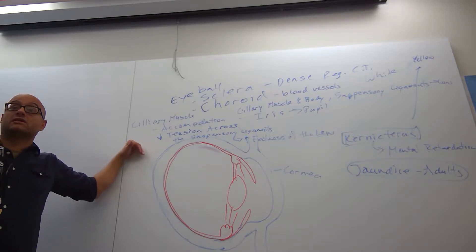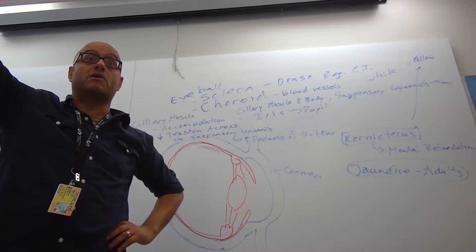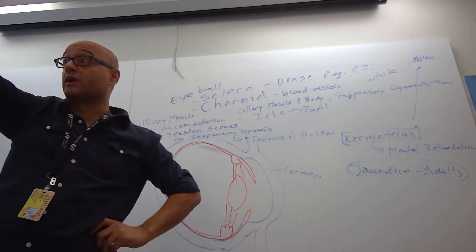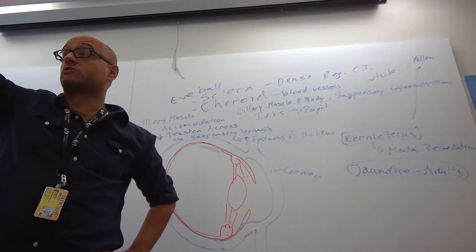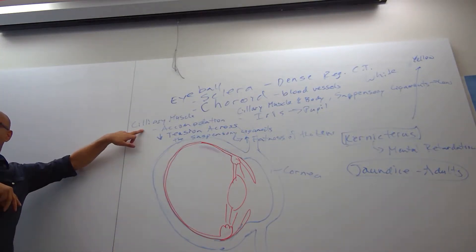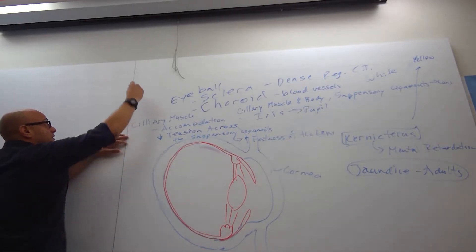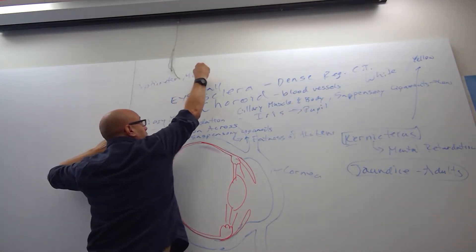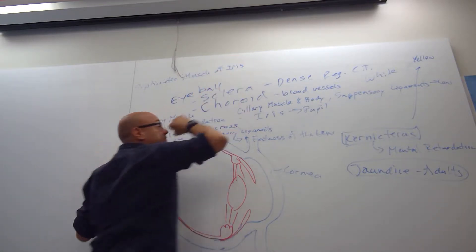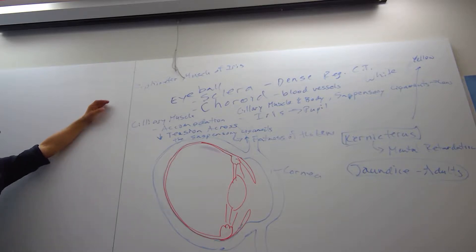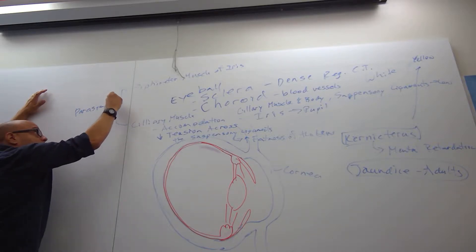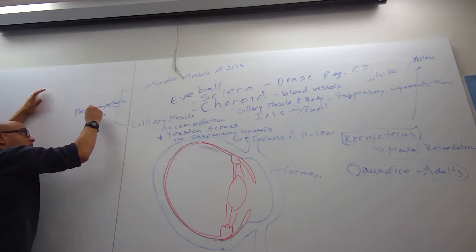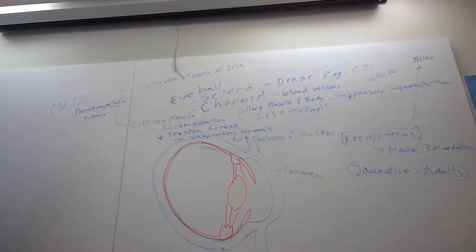We said parasympathetic three, seven, nine, and ten. Well, the parasympathetic of three is going to the smooth muscle of the eye - two of the three smooth muscles. One of them being the ciliary muscle, the other one being the sphincter muscle of iris. These two are connected to parasympathetic fibers being carried by cranial nerve number three. That's why this is an autonomic response.